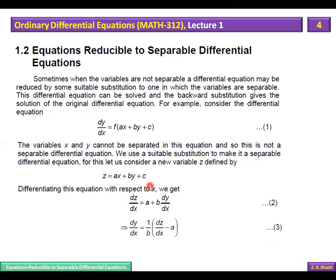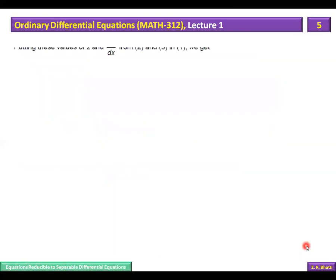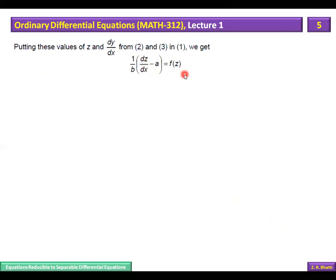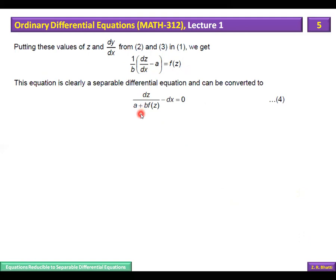We substitute z = ax + by + c into the original equation and also substitute the value of dy/dx that we derive from z. Putting these values in gives (1/b)(dz/dx) - a = f(z). Now we have two variables: z and x, whereas before we had x and y mixed. Now z and x can be separated. Separating gives dz / (a + b·f(z)) = dx.